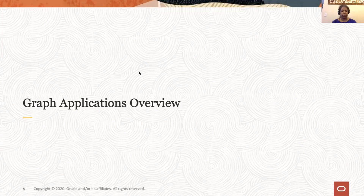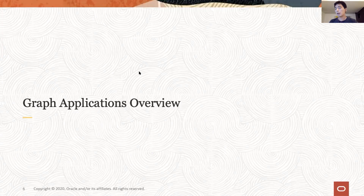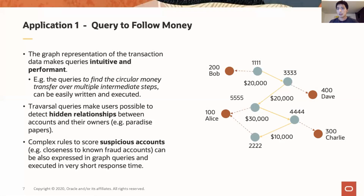I'm Ryota Yamanaka, a product manager in Asia Pacific. I'll start with an explanation of the three main applications of graph in this industry. The first application is using graph-based queries to follow money flows. Graph queries are very performant to follow edges on a graph having bank accounts as nodes and transactions as edges. Graph queries can find the relationship between two accounts and also detect specific patterns such as fraudulent activities.